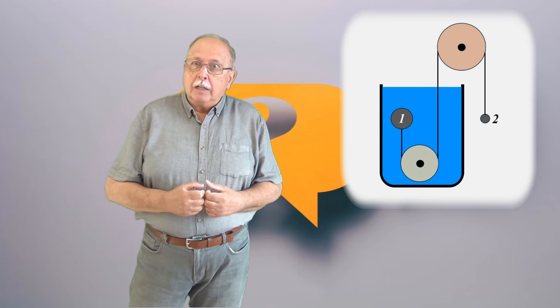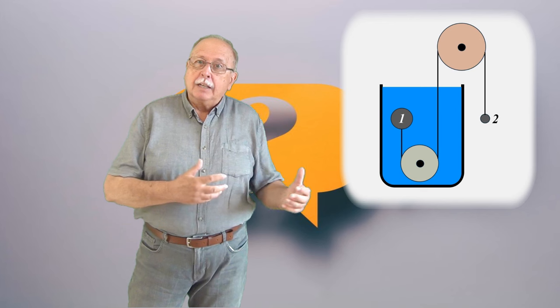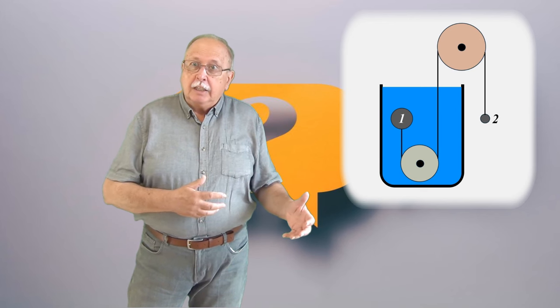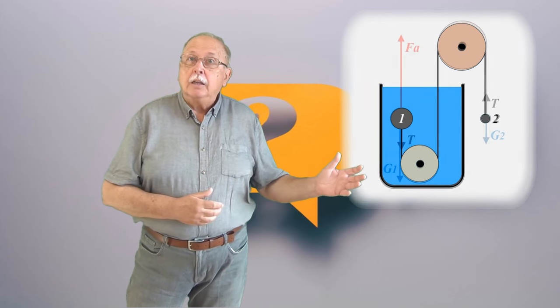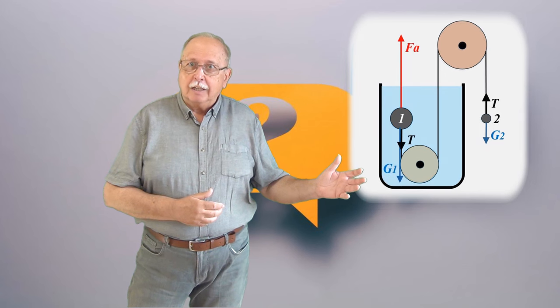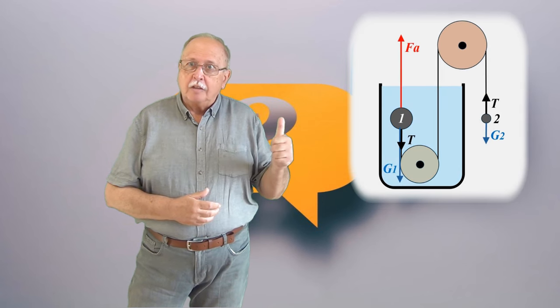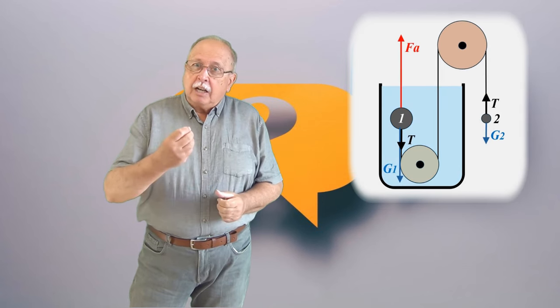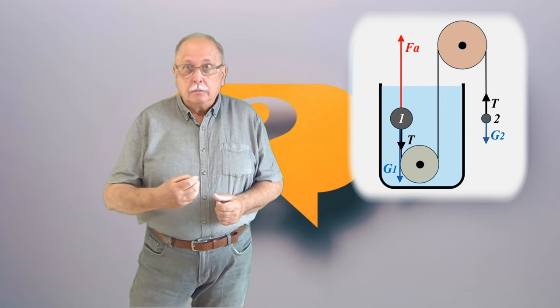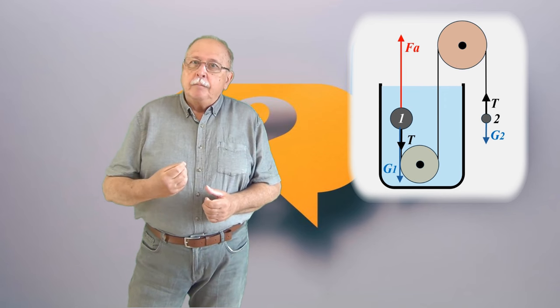Așa că trebuie să ținem seama doar de forța arhimedică care apare în apă. Deci asupra bilei din apă acționează trei forțe, așa cum vedeți în desen: forța arhimedică care împinge în sus și două forțe care trag de ea în jos, greutatea ei și tensiunea din fir.